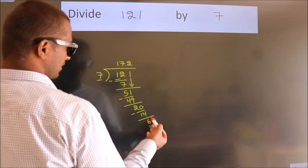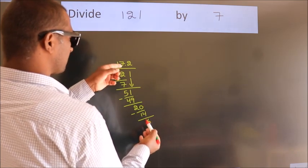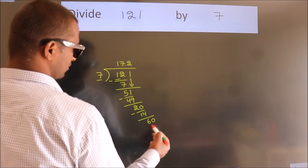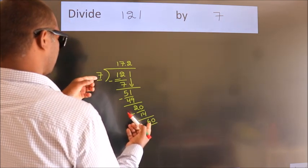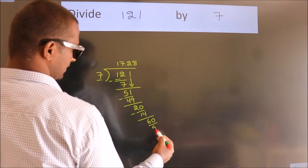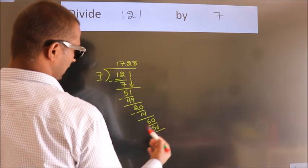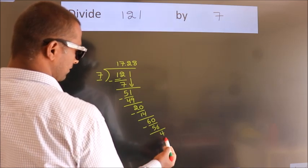After this, we already have the decimal, so directly take 0. So, 60. A number close to 60 in 7 table is 7 eights 56. Now, we subtract. We get 4, and the division continues.